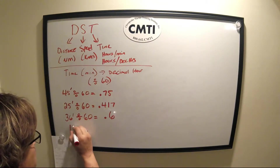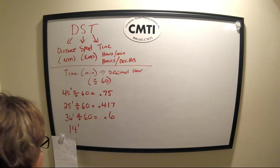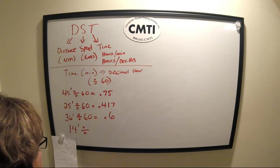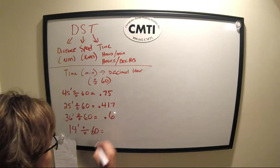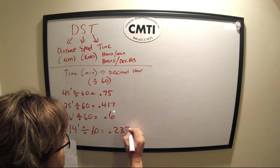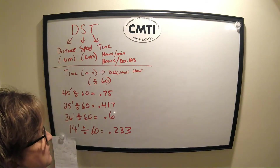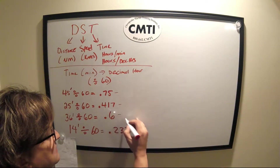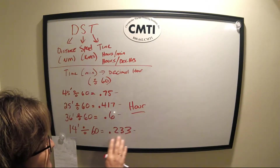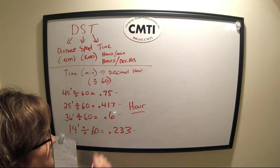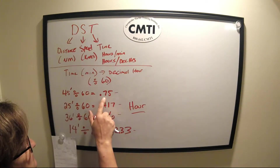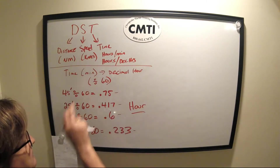The next one is 14 minutes. Put 14 in your calculator, divide by 60, and you get .233 of an hour. All of these values are parts of an hour — less than a full hour. Values to the right of the decimal represent fractions of an hour. That's how you go from minutes to decimal: divide by 60.